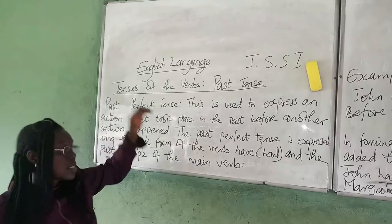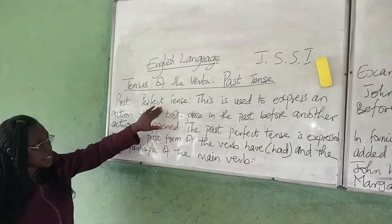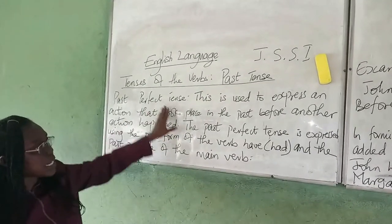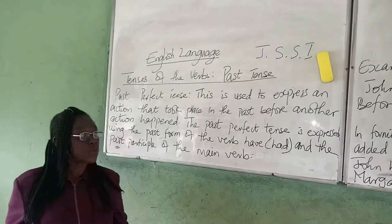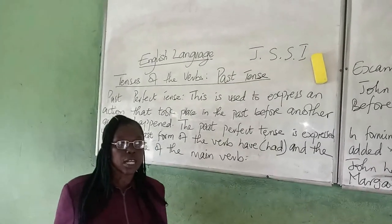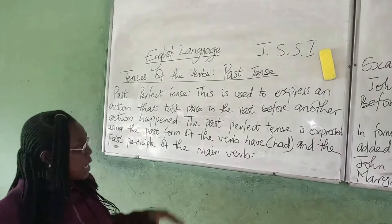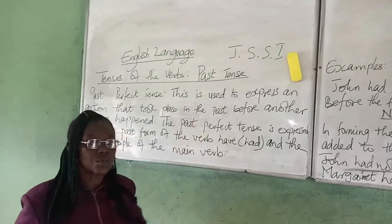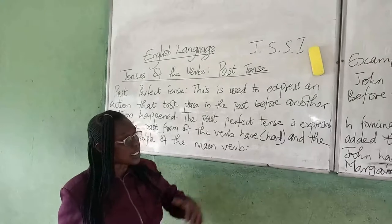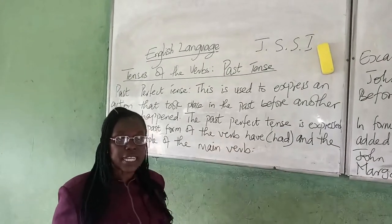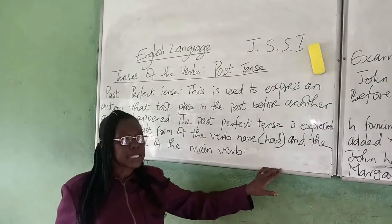We are continuing our class on the tenses of the verb and we are on the past tense today. We are looking at past perfect tense. This tense is used to express an action that happened in the past before another action took place. Now, I have John likes French and John traveled to France — the two sentences expressed using the simple past. But if I want to show that the action of learning French came before traveling to France, I will express this using the past perfect tense.